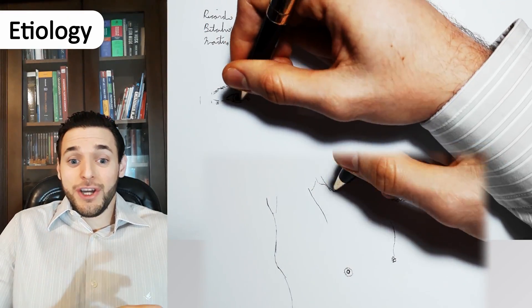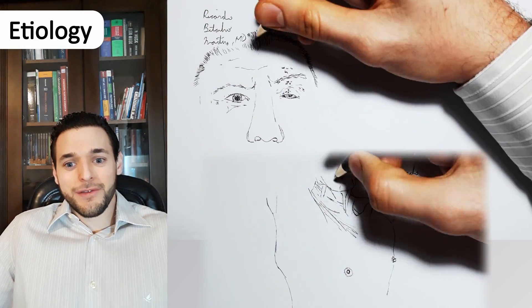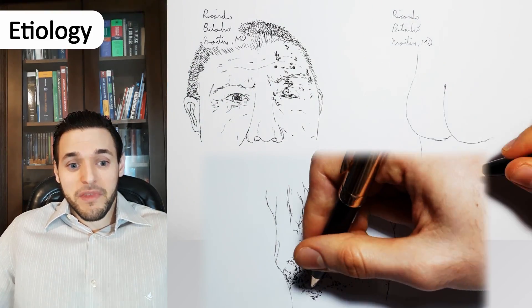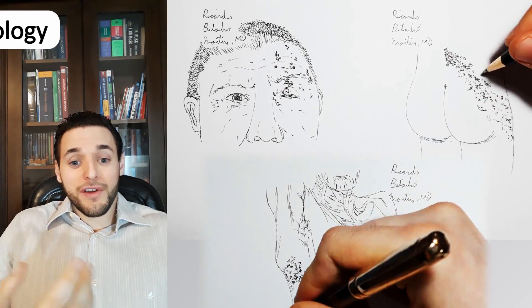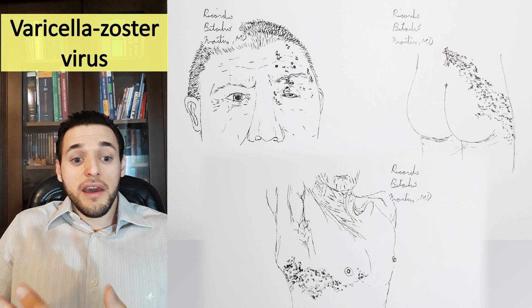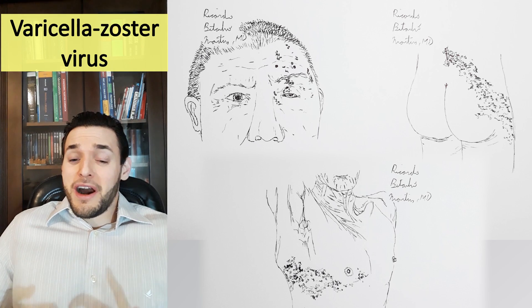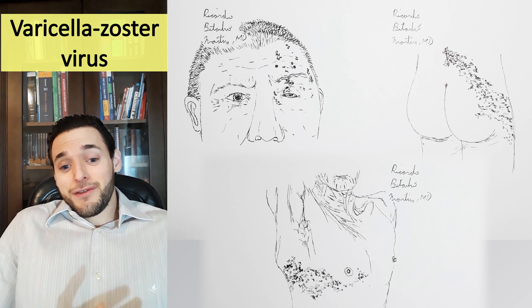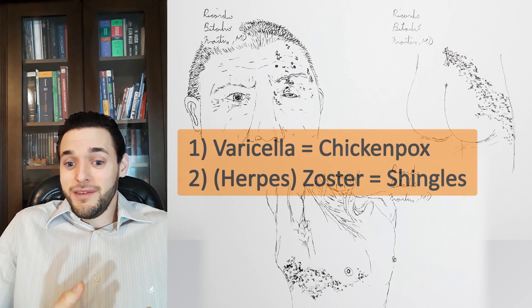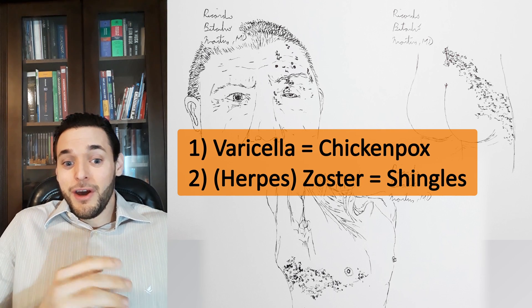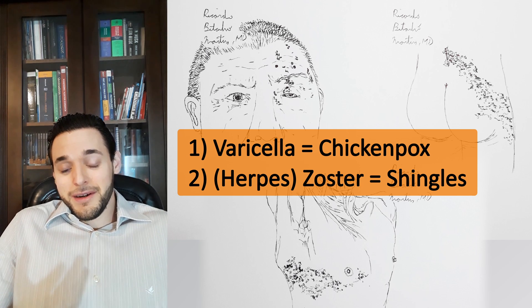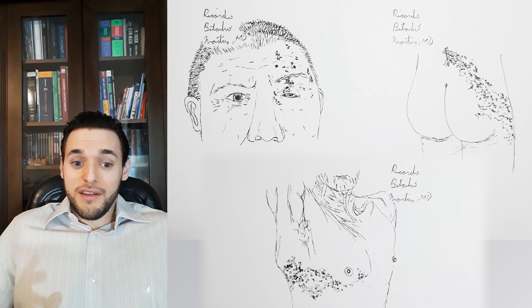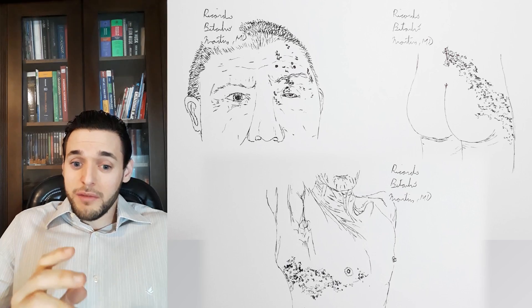Zoster, herpes zoster, or shingles, is an acute manifestation of a chronic viral infection — an acute manifestation characterized by the appearance of blisters and pain along a dermatome, and a chronic viral infection caused by the varicella zoster virus, an enveloped, double-stranded DNA herpes virus. The first point to establish is that shingles is caused by the very same virus that causes chickenpox or varicella.